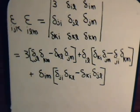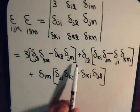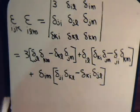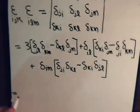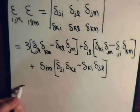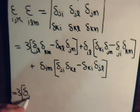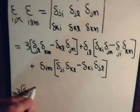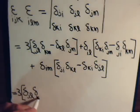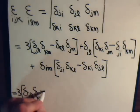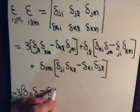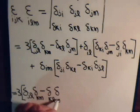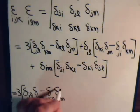Okay, it looks like there's nothing further we can do to simplify this term directly. So this equals 3 times (delta_JL * delta_KM minus delta_KL * delta_JM).